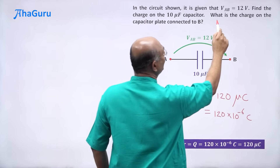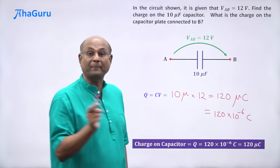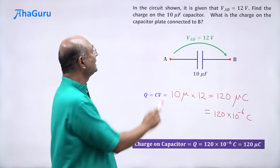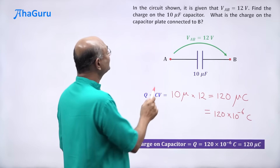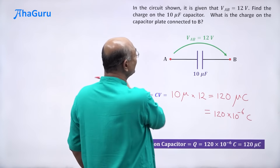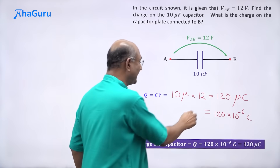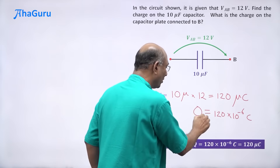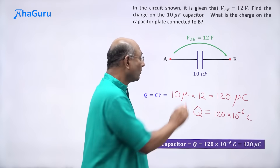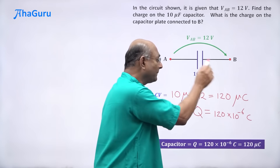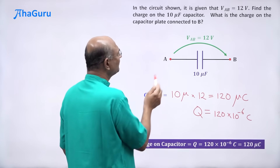The second part of the question asks what is the charge on the capacitor plate connected to B. When you are asked what is the charge on the capacitor, you give the positive value — Q on the capacitor is 120 microcoulombs or 120 into 10 to the power of minus 6 coulombs.